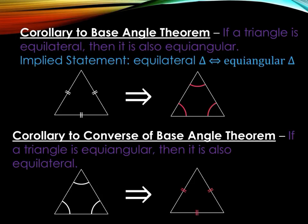Here we have the corollary to the Base Angle Theorem and its converse. The corollary states: if a triangle is equilateral, then it is also equiangular — equilateral triangle implies equiangular triangle. Then the corollary to the converse states: if a triangle is equiangular, then it is also equilateral.